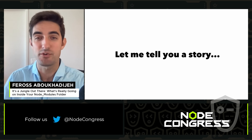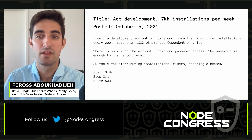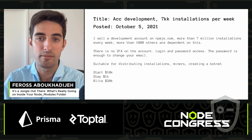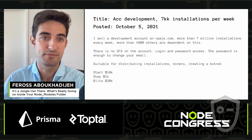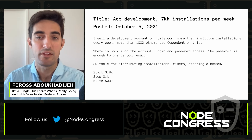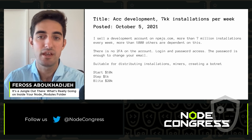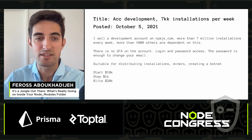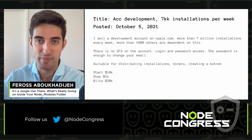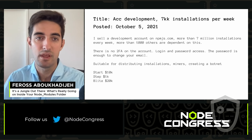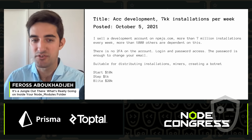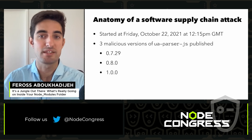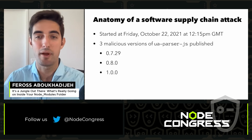Now let me tell you a different story. On October 5th, 2021, on a notorious Russian hacking forum, a post appeared. A hacker was offering to sell the password to an NPM account that controlled a package with over 7 million weekly downloads. His asking price was $20,000. This is where the two stories intersect — two weeks later, UAParserJS was compromised and three malicious versions were published.